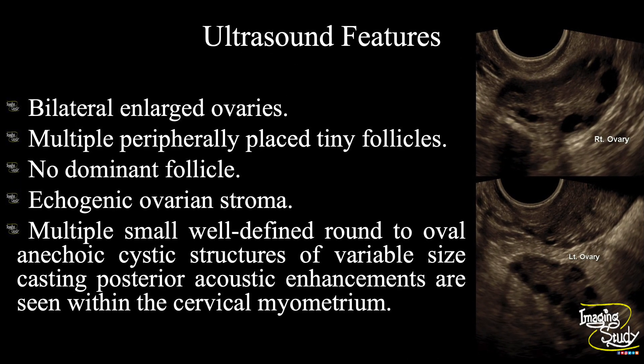In summary: bilateral enlarged ovaries with multiple peripherally placed tiny follicles without any dominant follicle are seen, forming the pearl string appearance. The ovarian stroma appears echogenic. Multiple small well-defined round to oval anechoic cystic structures of variable size casting posterior acoustic enhancements are seen within the cervical myometrium. These features suggest a case of polycystic ovarian disease with cervical Nabothian cysts.